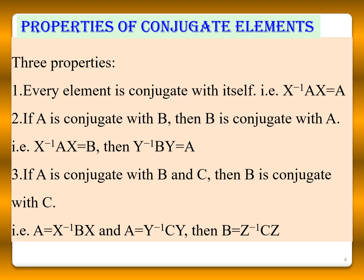The conjugate elements have three properties. The first one is: every element is conjugate with itself, that is X inverse A X is equal to A. The second property is: if A is conjugate with B, then B is conjugate with A — that is, X inverse A X equals B implies Y inverse B Y equals A. The third one is: if A is conjugate with B and C, then B is conjugate with C — that is, A equals X inverse BX and A equals Y inverse CY, then B equals Z inverse CZ.